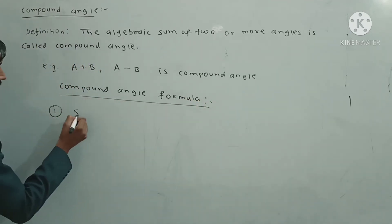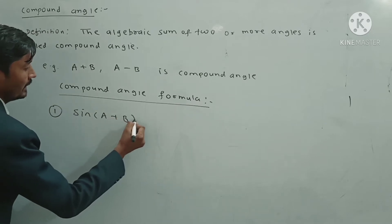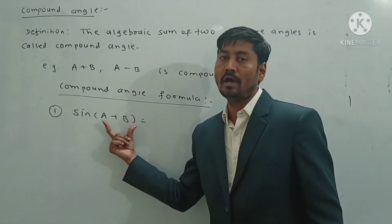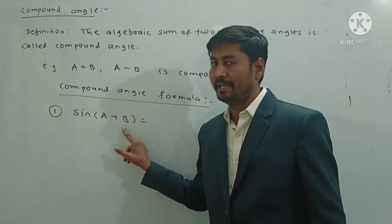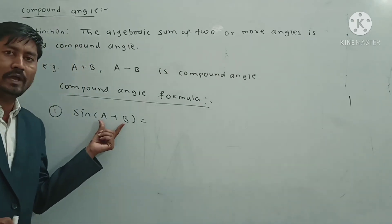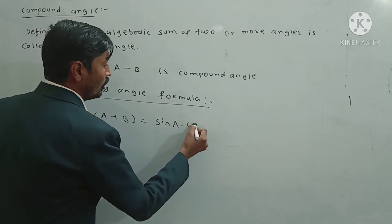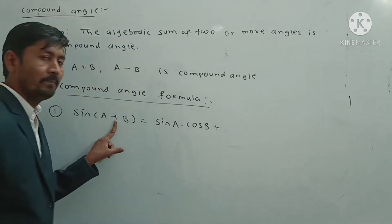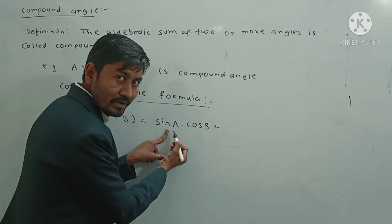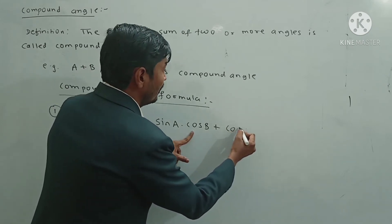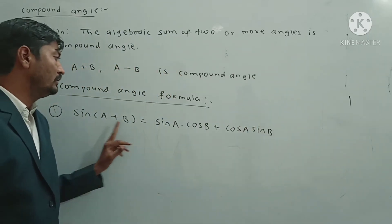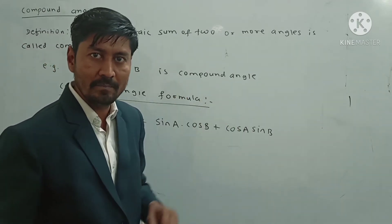The first formula is sin(A+B). Sin(A+B) is equal to sin A cos B plus cos A sin B. Here we have sine of the first angle, cosine of the second angle, plus cosine of the first angle and sine of the second angle.